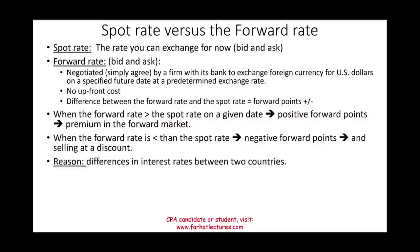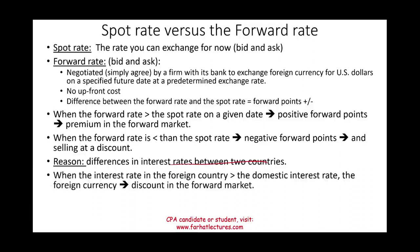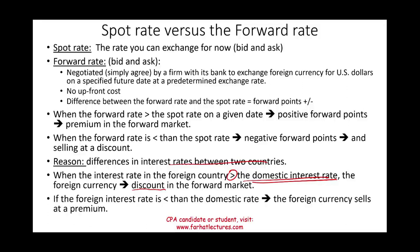When the forward rate is less than the spot rate, we have negative forward points and the currency is said to be selling at a discount. The difference between forward and spot rates usually results from differences in interest rates between the two countries. When the foreign interest rate is greater than the domestic rate, the foreign currency typically trades at a forward discount. When the foreign interest rate is lower, the foreign currency sells at a premium.